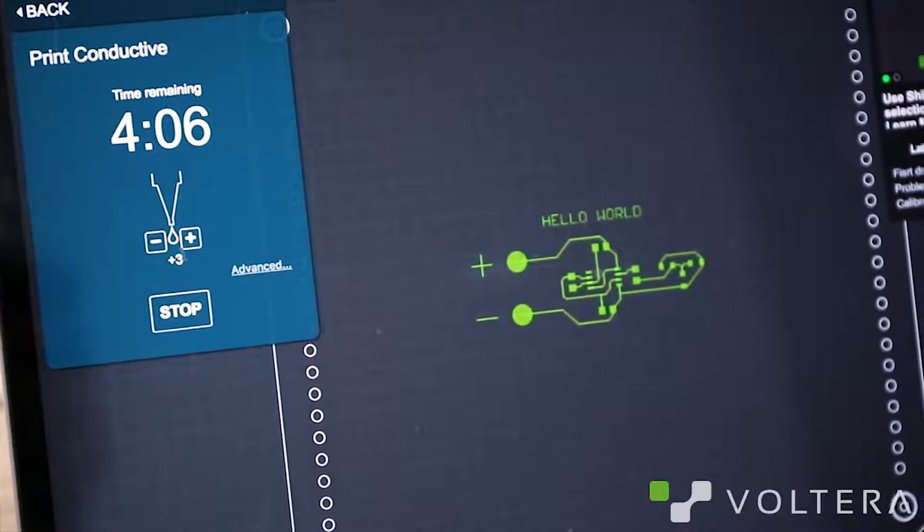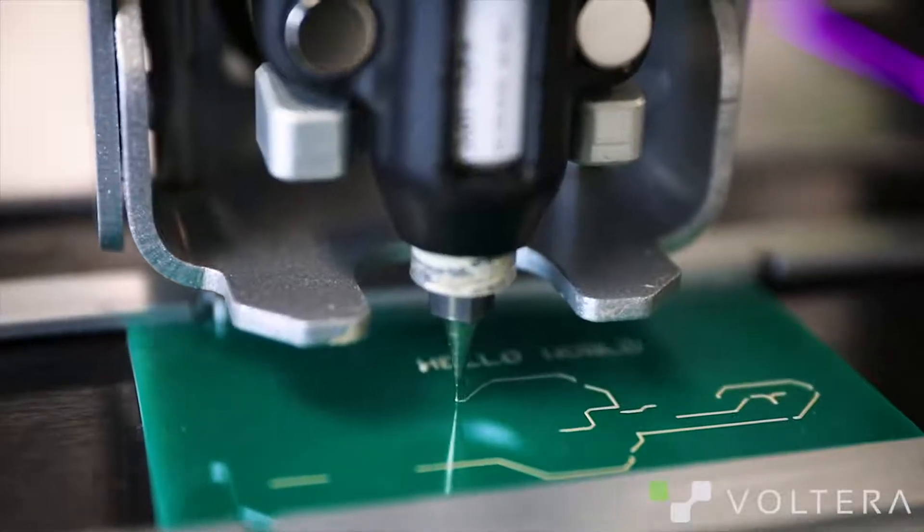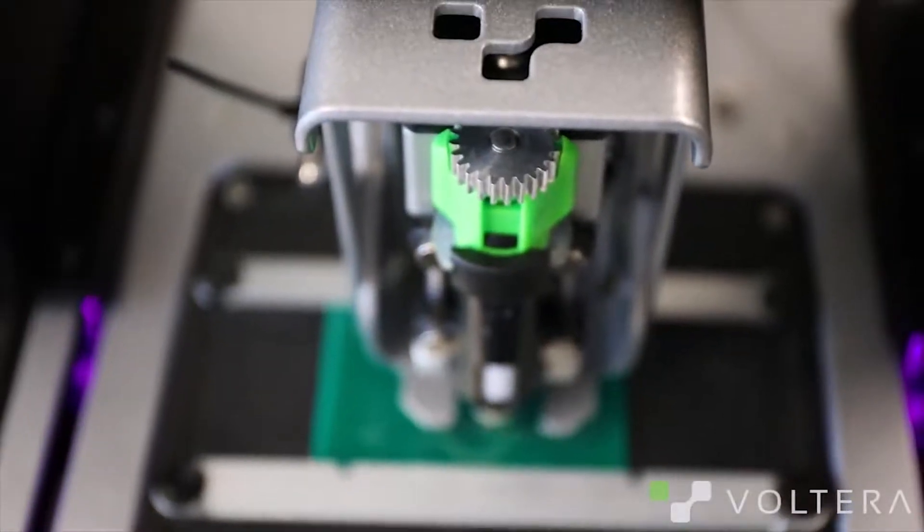All right, let's print this board. I'm going to keep an eye on this one to make sure it's flowing well. You get too much ink and it's going to short some circuits. If you get too little, you're not going to get complete traces. But if we've primed and calibrated properly, it should print nicely.